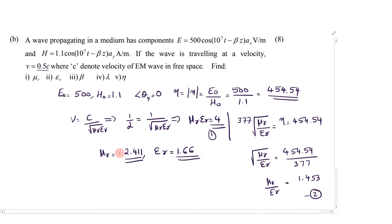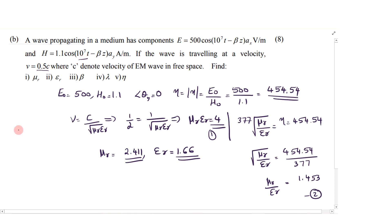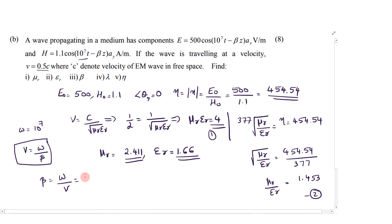Next, we calculate beta and lambda. We have calculated mu r, epsilon r, and eta. Omega is given as 10 raised to 7. To calculate v, we use v equals omega divided by beta, so beta equals omega over v. Omega is 10^7 and v is 0.5c, that is 0.5 times 3 times 10^8. That gives 10^7 divided by 1.5 times 10^8, which equals 0.066. This is the value of beta.